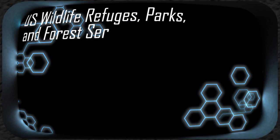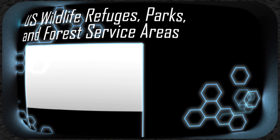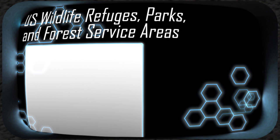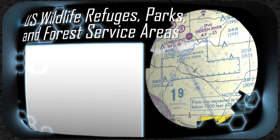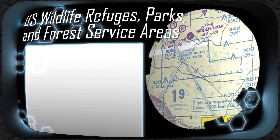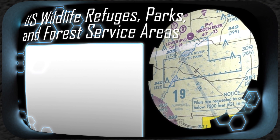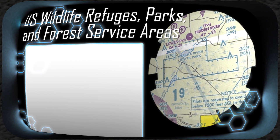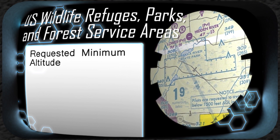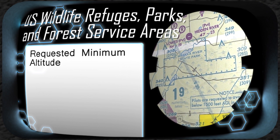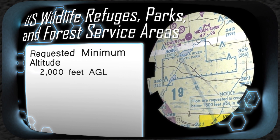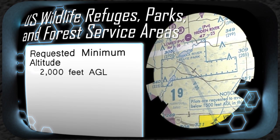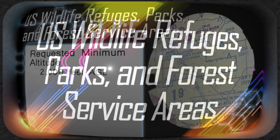The areas above U.S. wildlife refuges, parks, and forest service areas are depicted by a blue line and dotted border, and are usually labeled with the name of the area. Pilots are requested to maintain a minimum altitude of 2,000 feet above the surface of these areas.